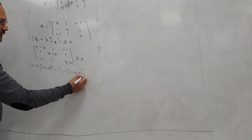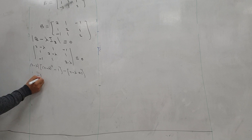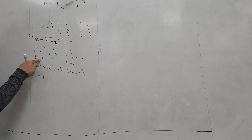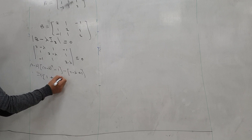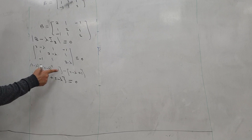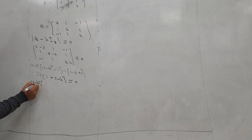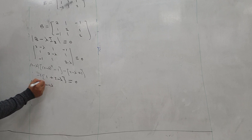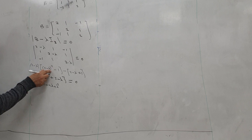Continuing the expansion: 1 multiplied by (1 times (2 minus lambda) minus 1), plus 1 multiplied by the remaining minor containing elements 1, 1, 1, minus 1 times (2 minus lambda), plus (2 minus lambda). This equals 0.